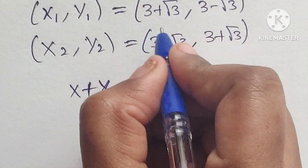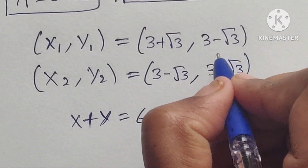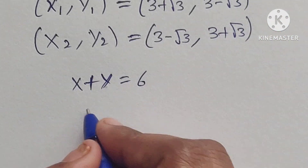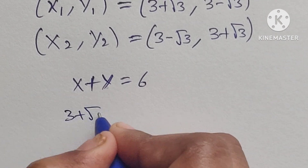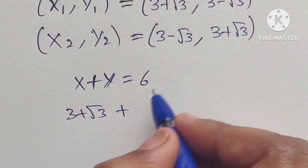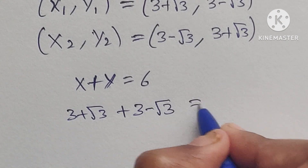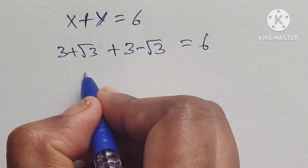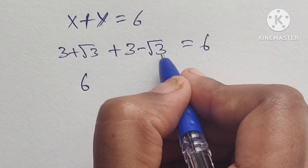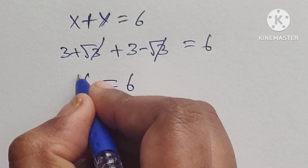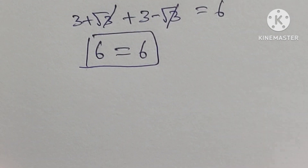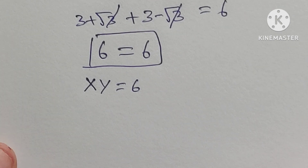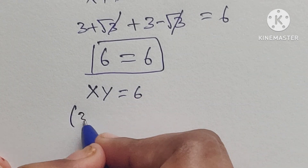Substituting into equation 1: (3 plus square root of 3) plus (3 minus square root of 3) equals 6. The square root of 3 terms cancel, giving 3 plus 3 equals 6, so 6 equals 6. This is true.